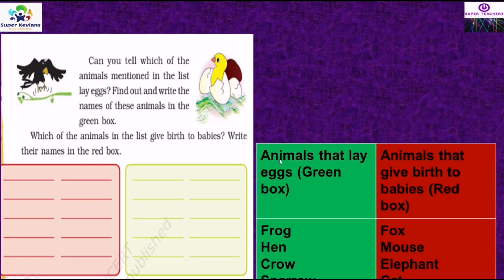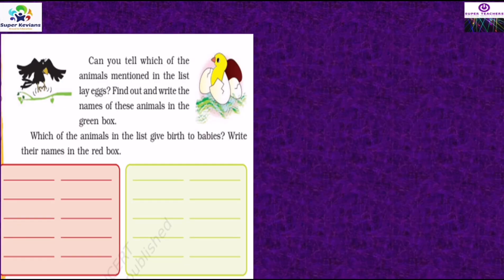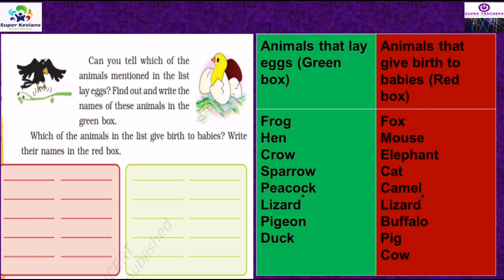Can you tell which of the animals in the list lay eggs? Find out and write their names in the green box, and write the names of animals that give birth to babies in the red box. Animals that lay eggs (green box): frog, hen, crow, sparrow, peacock, lizard, pigeon. Animals that give birth to babies (red box): fox, mouse, elephant, cat, camel, lizard, buffalo, pig, cow.